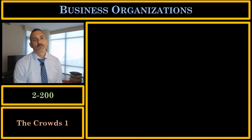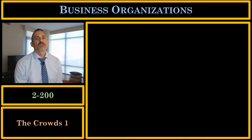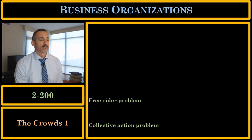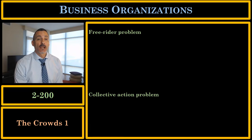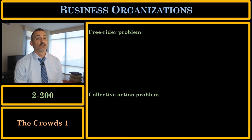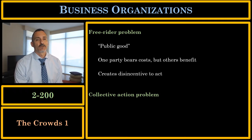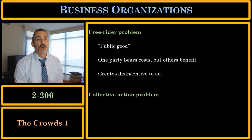Let's talk about the crowds — what I mean by the crowds is how having a large group of people changes the dynamic and changes the incentives for any one person to act. Let's talk about the free rider problem and the collective action problem. These two problems are crucial to understanding a lot of the issues in business organization law. The free rider problem is where we have a public good and one party bears the costs of that public good, but the others benefit, creating a disincentive for that party to act.